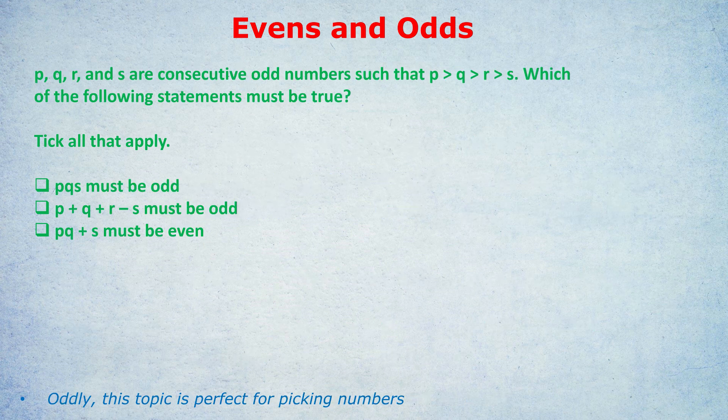Third question. P, Q, R, and S are consecutive odd numbers such that P is greater than Q, which is greater than R, which is greater than S. Which of the following statements must be true? I included this example because even and odd questions are particularly susceptible to picking numbers.